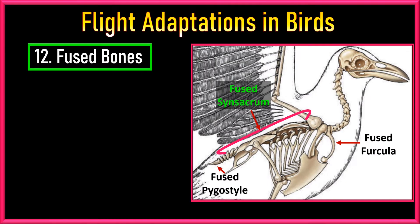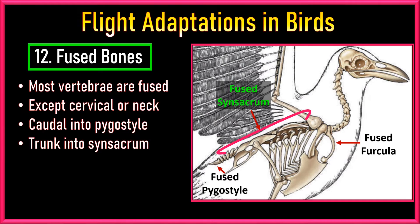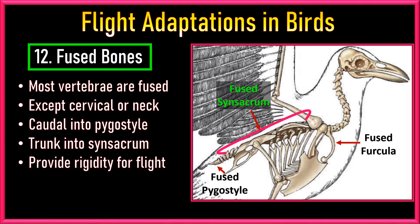Number 12: Fused Bones. Most vertebrae, except the cervical or neck vertebrae, are fused together. Most caudal vertebrae are fused into the pygostyle, while many of the remaining vertebrae in the trunk are fused as the synsacrum. These fused vertebrae and the pelvic girdle form a stiff but light framework to support the legs and to provide rigidity for flight. This is another excellent anatomical adaptation for flight in birds.